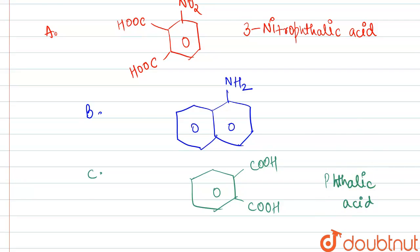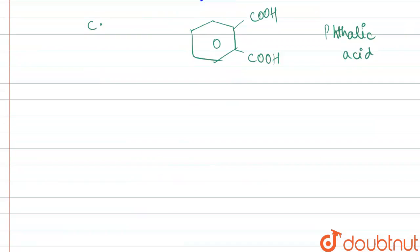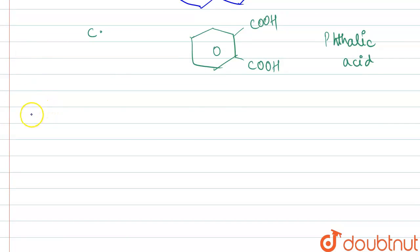Okay, so if we talk about part B, naphthalene is oxidized in the presence of vanadium pentoxide. So what is product A that we would be getting? In part B, we are going to get phthalic anhydride.